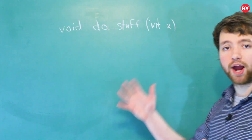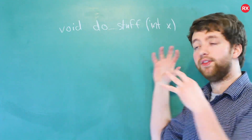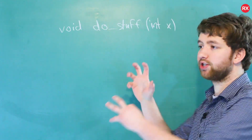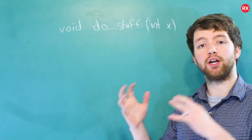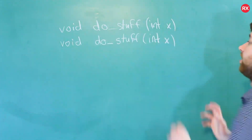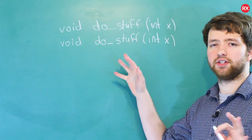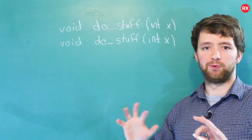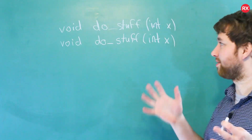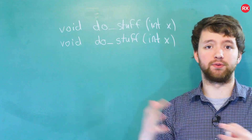So here's the thing. When you create a function, it's defined in your program. Here is an extremely practical function I just created that is going to do stuff for us. This is established as a function in your program, meaning if you type it again, you're going to have a problem. The compiler is going to complain — it'll give you some cryptic message saying something along the lines of: 'do stuff has already been defined, or you're redefining a function that was already defined.'